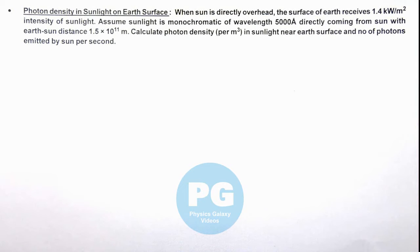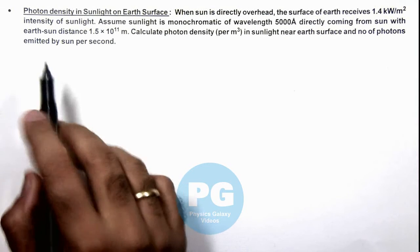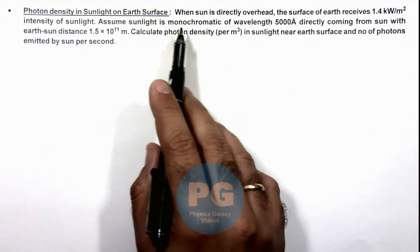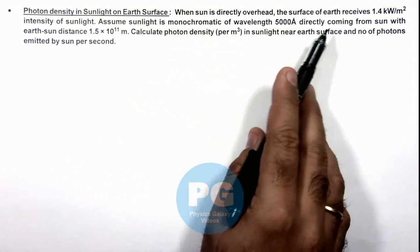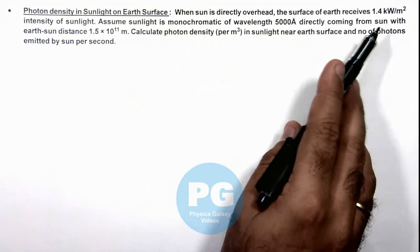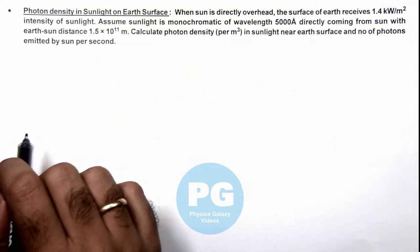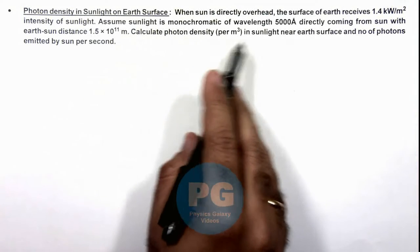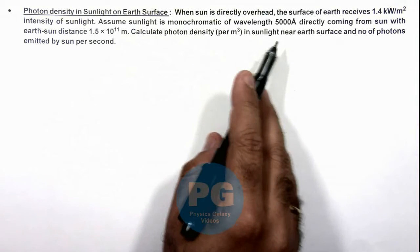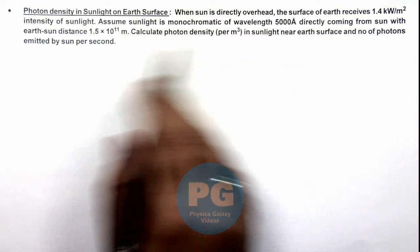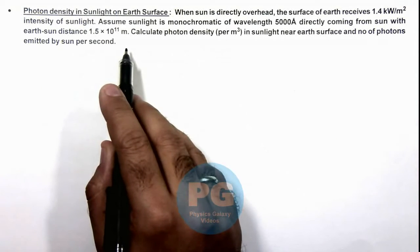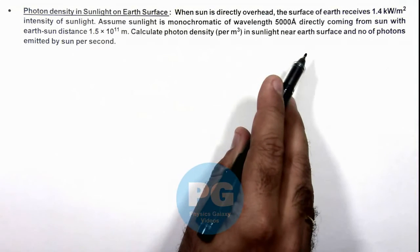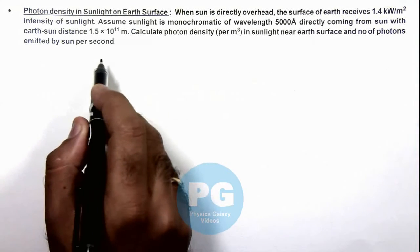In this illustration we'll study about photon density in sunlight on Earth's surface. We are given that when the sun is directly overhead, the surface of Earth receives 1.4 kilowatts per meter square intensity of sunlight. Assuming sunlight is monochromatic of wavelength 5000 angstroms, directly coming from the sun, with the Earth-Sun distance given, we are required to calculate the photon density in sunlight near Earth's surface and the number of photons emitted by the sun per second.